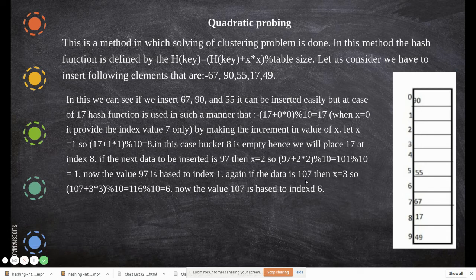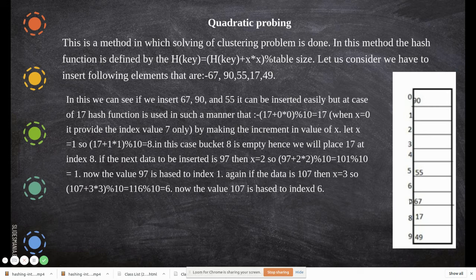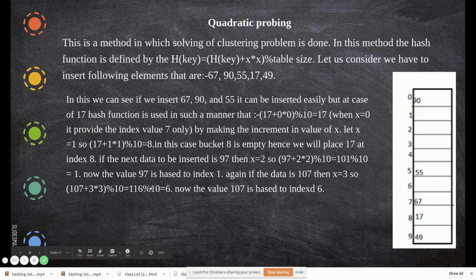Again, if the data is 107, let's consider the next location. We've already placed 101 here. Now 107 also will produce 7 as the same location. This is over, this is over, and the second is over. So x becomes 3, which is 3×3 equals 9. (107+9) is 116, and 116 mod 10 is 6. Now you have to place 107 at index 6.